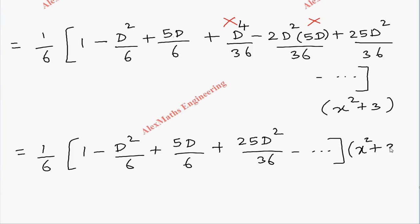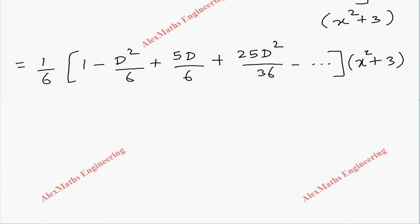Now this x² I'll multiply with everything. So 1/6[x² - D²(x²)/6 + 5D(x²)/6 + 25D²(x²)/36]. When I differentiate x² twice I get 2, so D²(x²) = 2. Then 5/6 times the differentiation of x² is 2x.